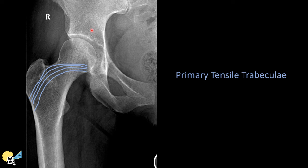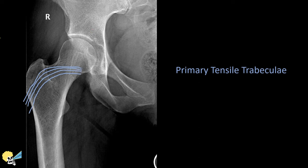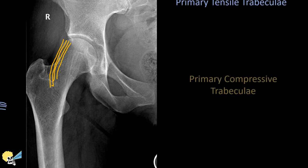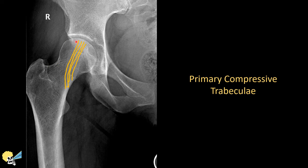Here we have several trabecular patterns, with the primary tensile trabeculae and the primary compressive trabeculae being the most important. As the name implies, they provide support to tensile and compressive stress applied to the proximal femur. However, the way the trabeculae look in imaging studies gives us clues of possible underlying pathology.